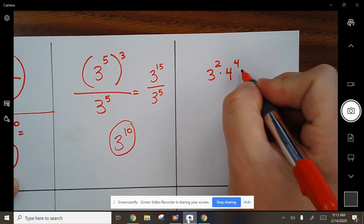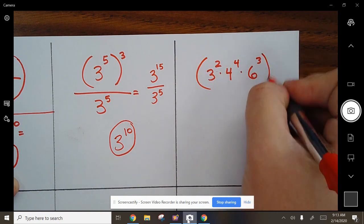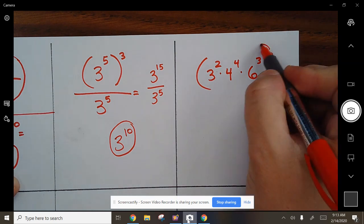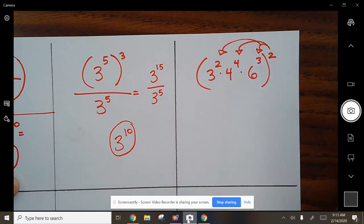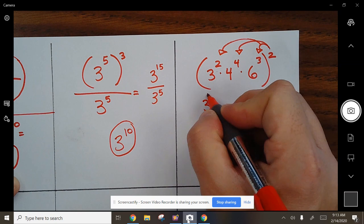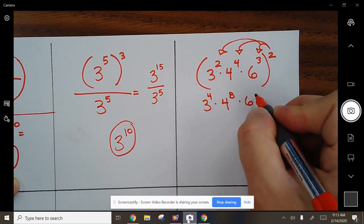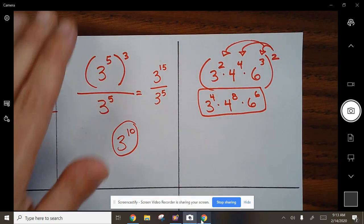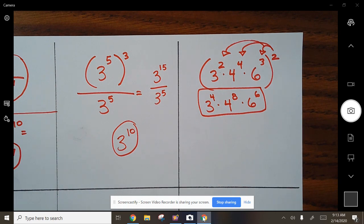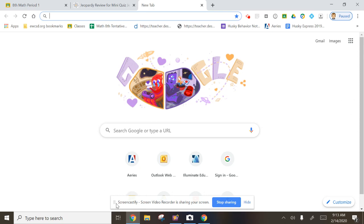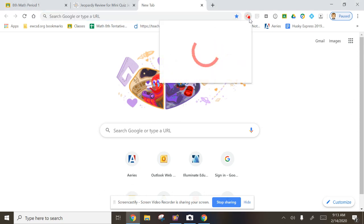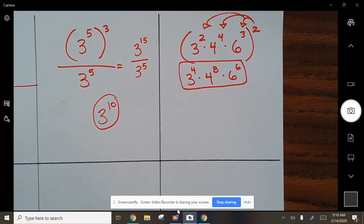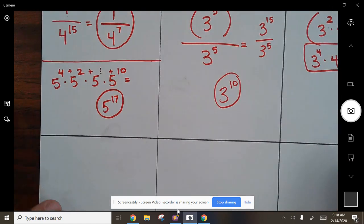Write all this down. Next one, we're going to deal with another larger parenthesis to the second power. When dealing with this, you just need to know that you are going to be multiplying. This becomes 3 to the 4th, 4 to the 8th, 6 to the 6th, and that's your final answer.